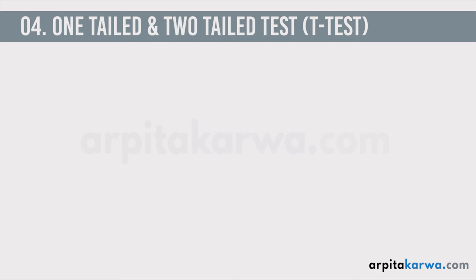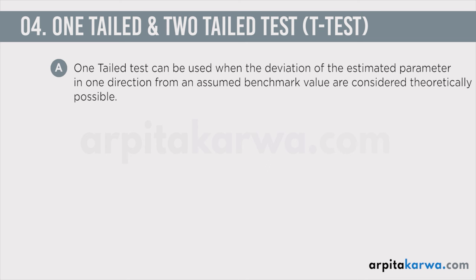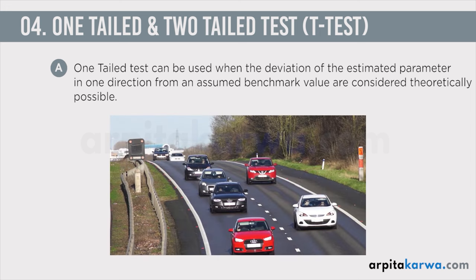In research, the one-tail test can be used when the deviations of the estimated parameter are in one direction from the assumed benchmark value. Consider a null hypothesis that states that cars travelling on a particular road have a mean speed of 40 miles per hour. If you want to see whether other cars moving on this road have a mean velocity greater than 40 miles per hour, or if you want to check whether they have a mean velocity less than 40 miles per hour, you are going to use a one-tail test.